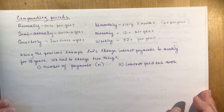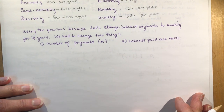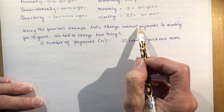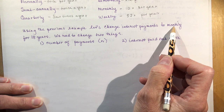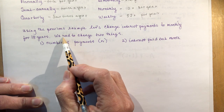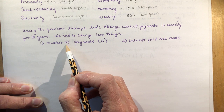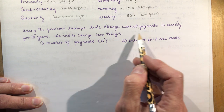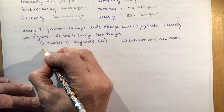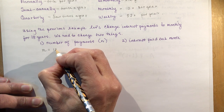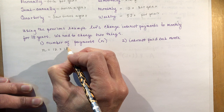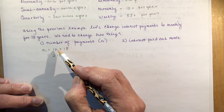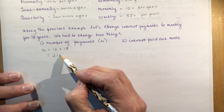Using the previous example of $10,000, what would happen if you changed the interest payments to monthly for 18 years? We will need to change two things: the number of payments and the interest paid each month. For the number of payments, if I'm going monthly for 18 years, N is going to be 12 times 18, which is 216. So you're going to get interest paid into your account 216 times.